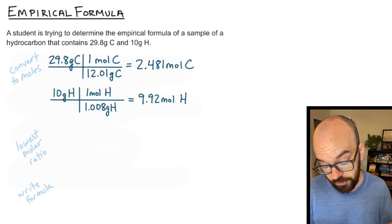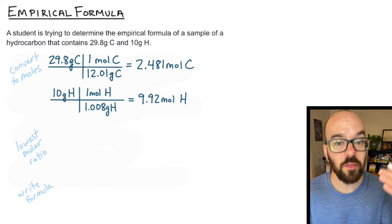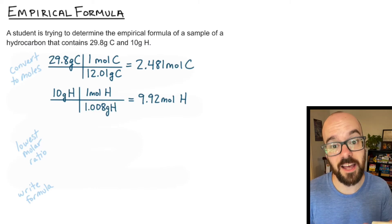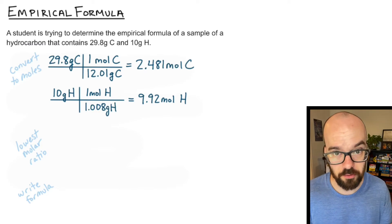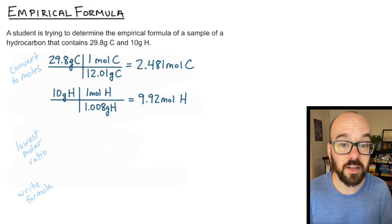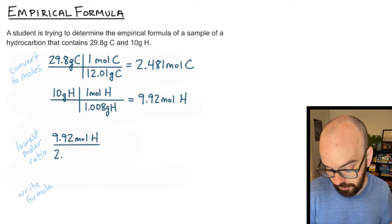Okay so we have the moles of carbon present and the moles of hydrogen present. The next thing we need to do is find the ratio of these elements. What I'm going to do is take the element that has the fewest number of moles and divide that into each of the other numbers. If I had three elements present in this compound I would divide the lowest into each of them to figure out my ratios. In this case I just have two so I'm going to divide 2.481 into 9.92.